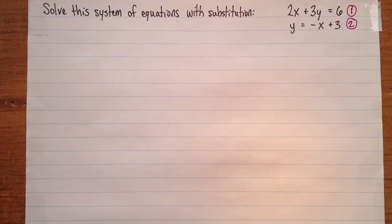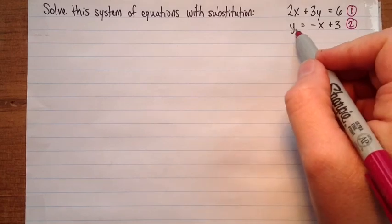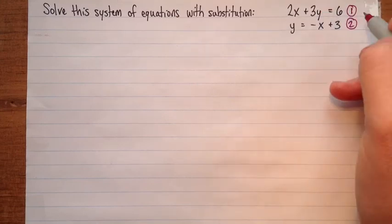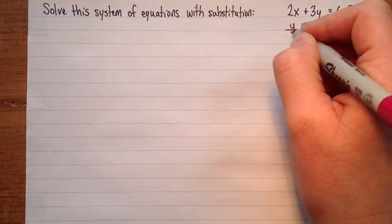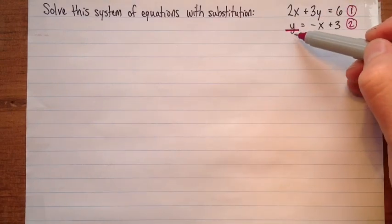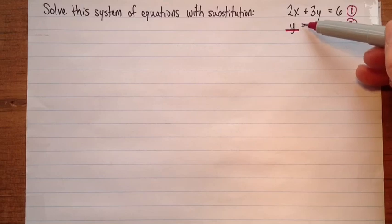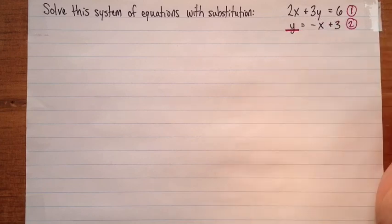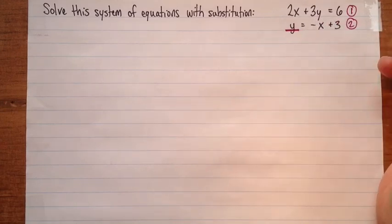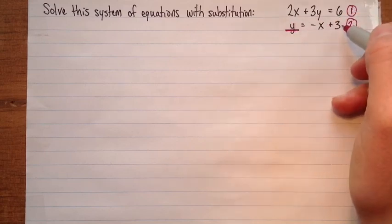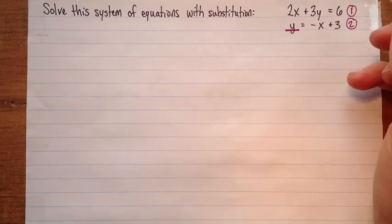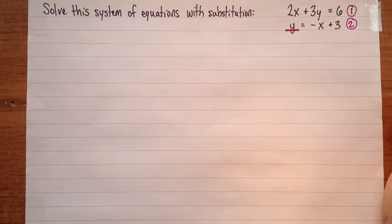Now I'd like you to notice something special about equation 2. This equation is written in slope-intercept form — the slope is negative 1 and the y-intercept is 3. But what's really important to notice is that one of the variables is isolated: y is all alone on the left side of the equal sign. So we know exactly how much y is — y equals negative x plus 3. It's really convenient that in equation 2 it's already done.